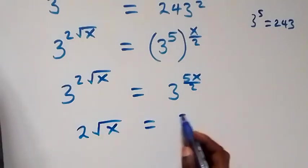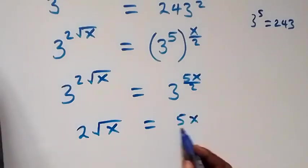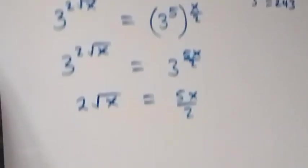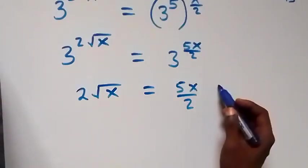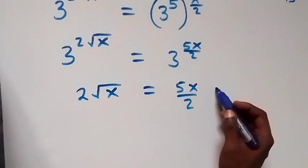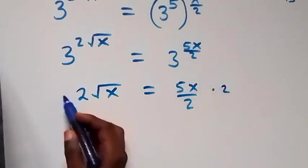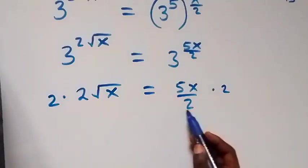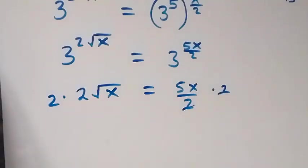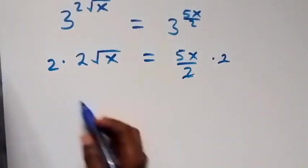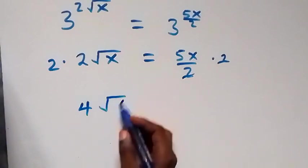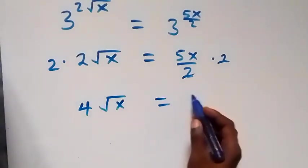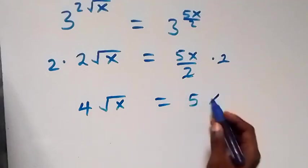We multiply both sides by 2. On the left side, 2 times 2 root x gives 4 root x. On the right side, the 2 in the denominator cancels, leaving 5x. So we have 4 root x equals 5x.